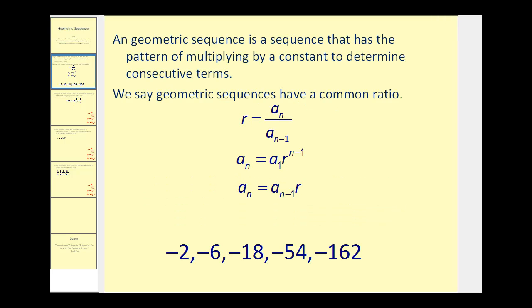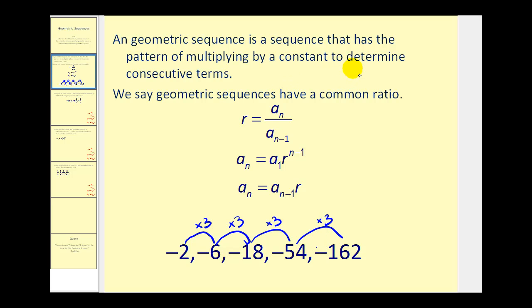A geometric sequence is a sequence that has a pattern of multiplying by a constant to determine consecutive terms. We say geometric sequences have a common ratio. If we look at this sequence below and look for a pattern, we'll see that we multiply the first term by three to get the second term, and that pattern continues — times three from the second to the third, and times three from the third to the fourth, and so on. This tells us that our common ratio, or r, is equal to three.